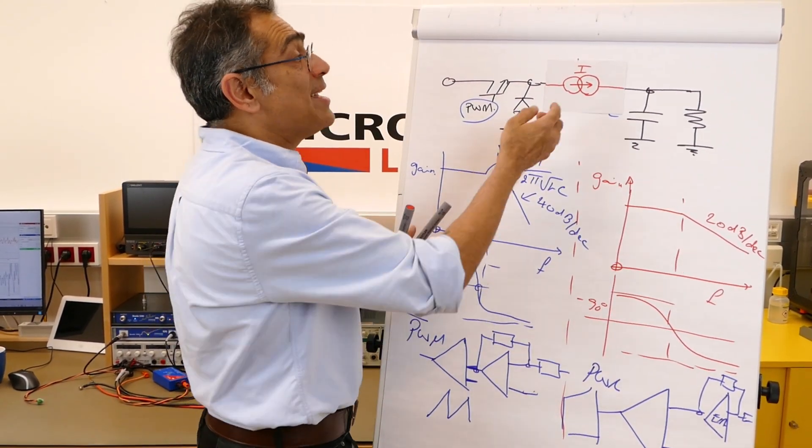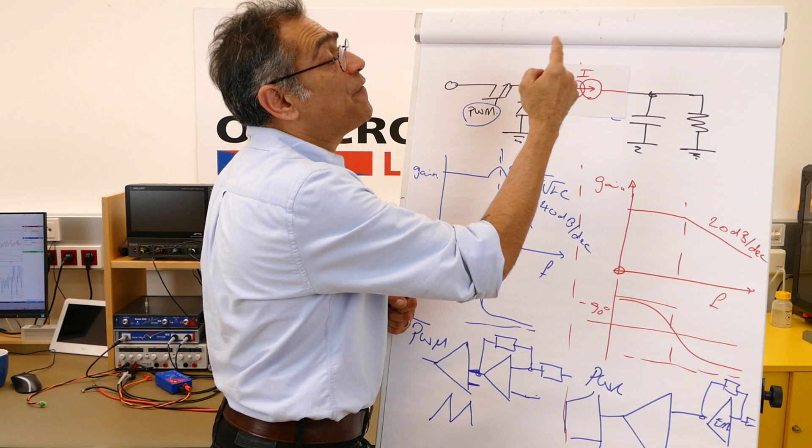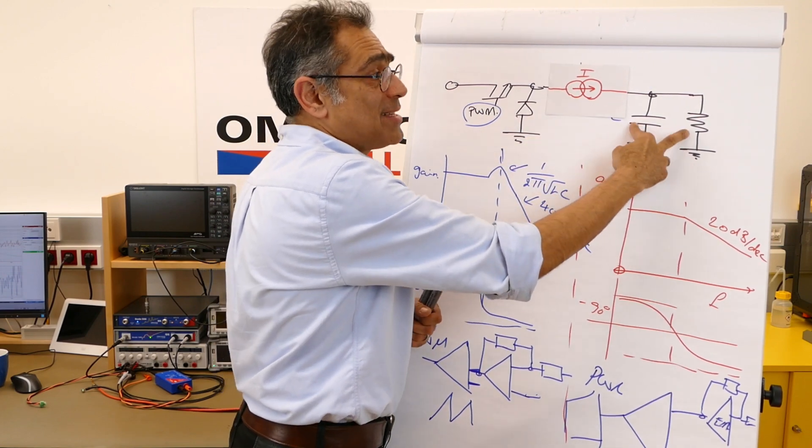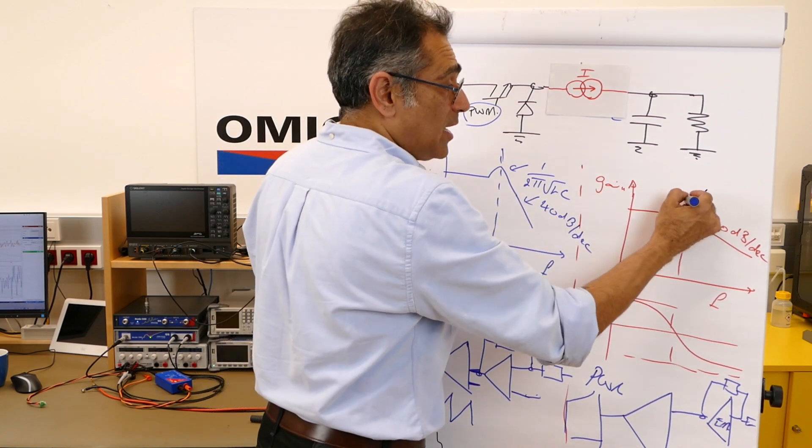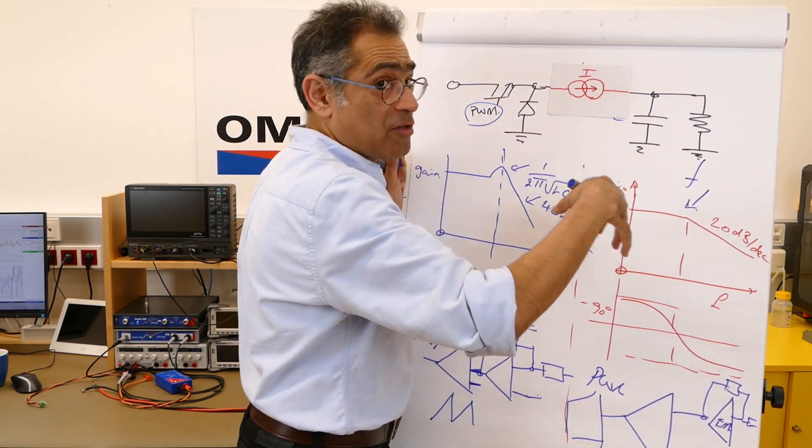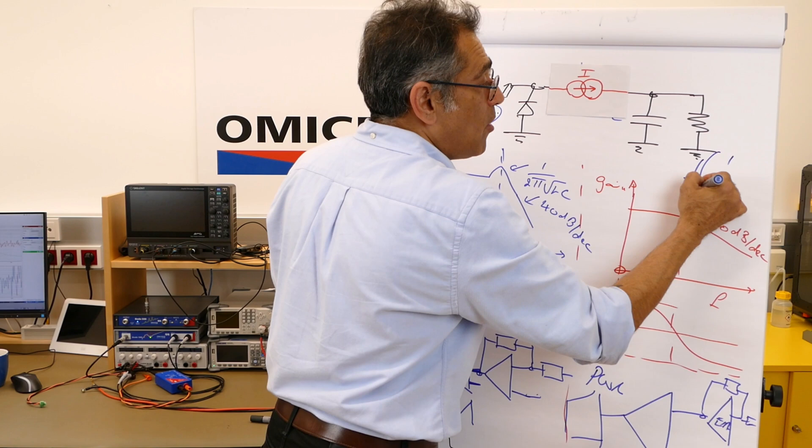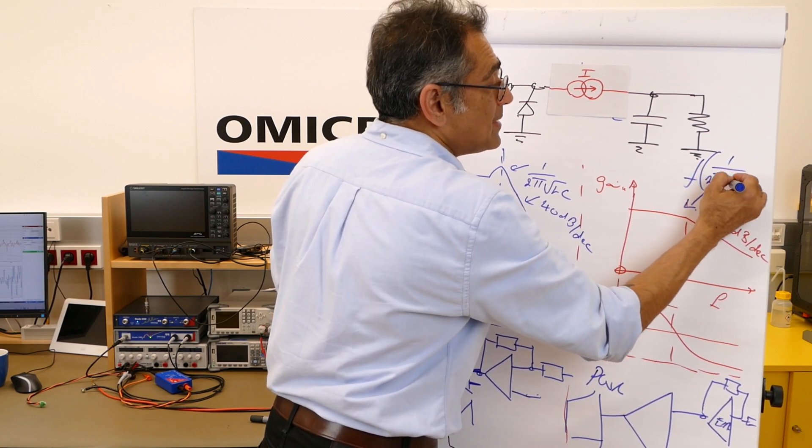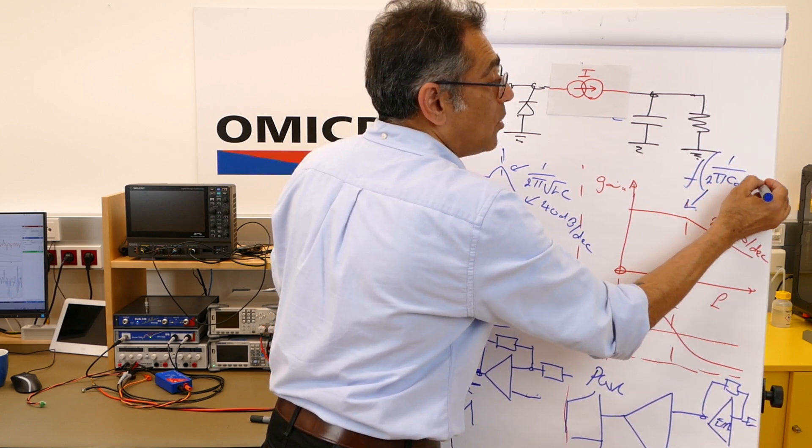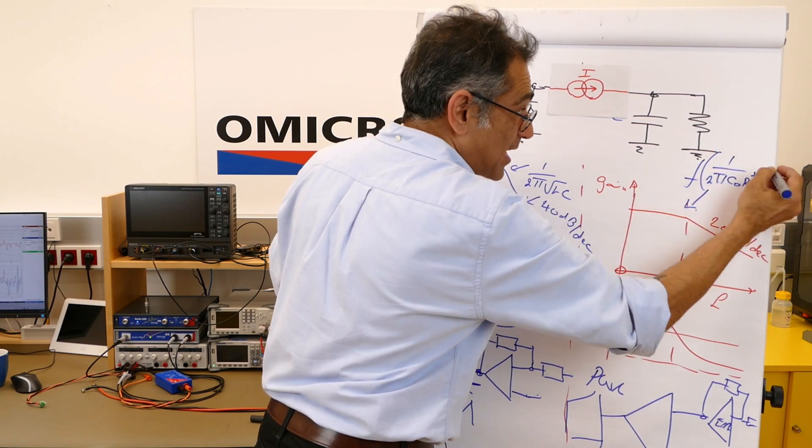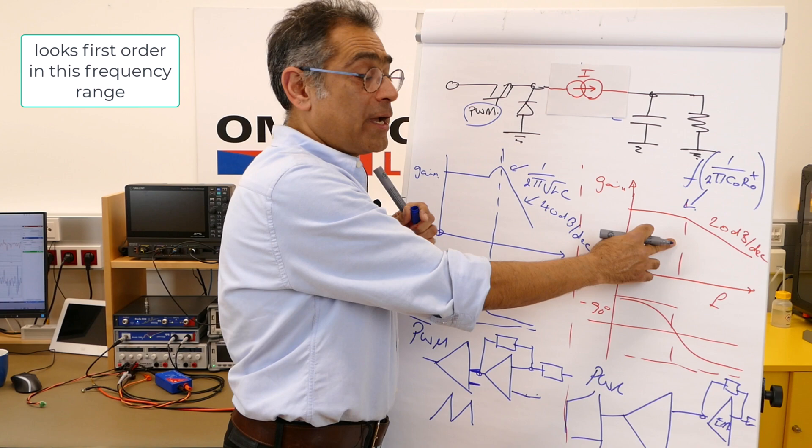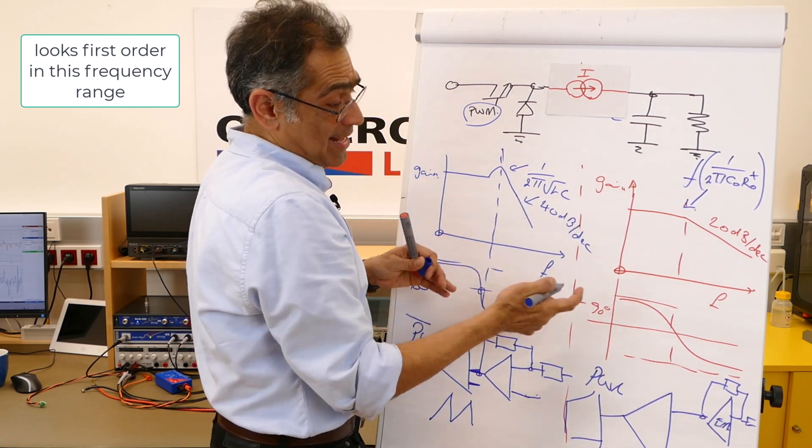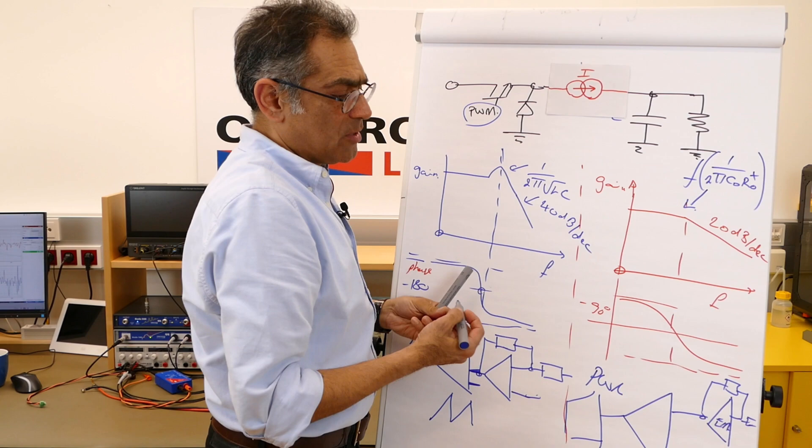It's acting like a one amp current source, and that's why it disappears out of the loop response, and we're going to show that when we measure it. So what happens here is a current source feeding output capacitor and output resistor, and therefore you have a single pole here which is a function of one over 2π C_out R_out plus other things, but it's a first order system. And you will see that when you look at the loop response.